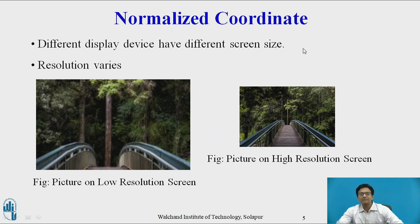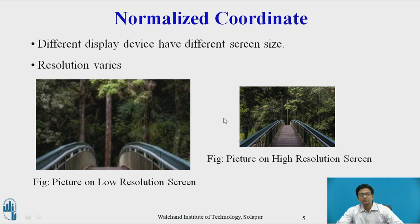We have a problem in mapping world coordinate images to screen coordinates because different display devices have different screen sizes and resolutions vary. When we map a picture on a low resolution screen, the image gets distorted, and when a picture is mapped to a high resolution screen, we get a smaller image. To eliminate this problem, we require normalized coordinates.